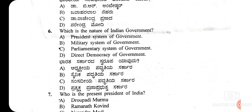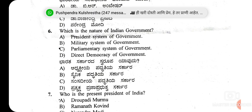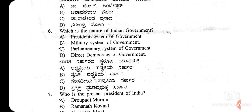The 6th question is: what is the nature of the Indian government? The options are presidential system, military system, parliamentary system, or direct democracy. The right answer is parliamentary system of government — option C is the right answer.